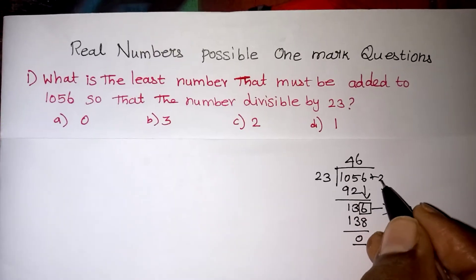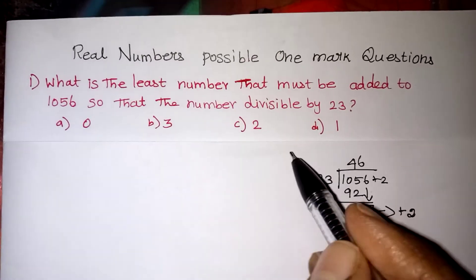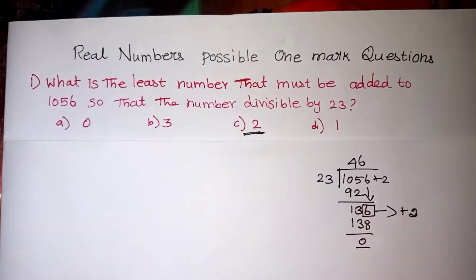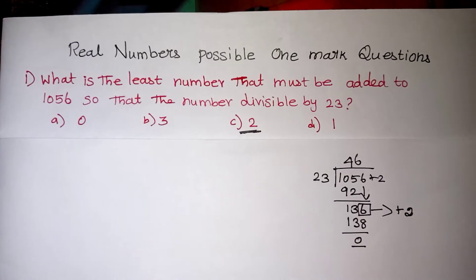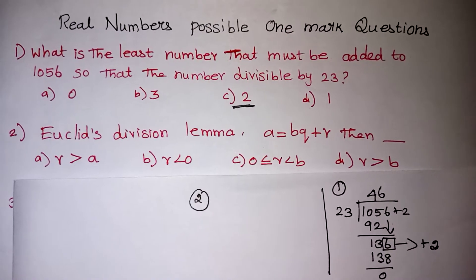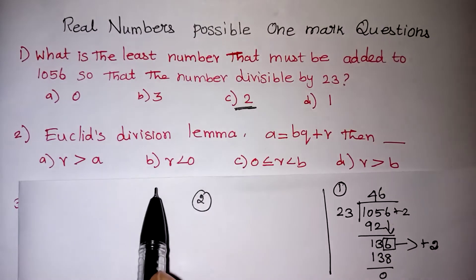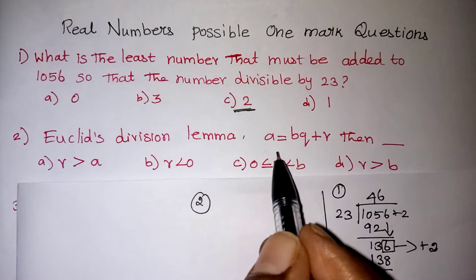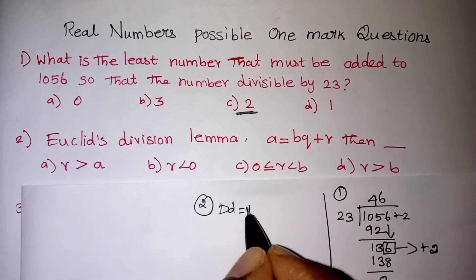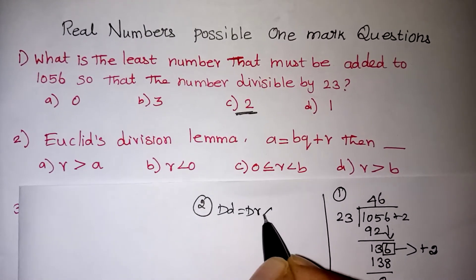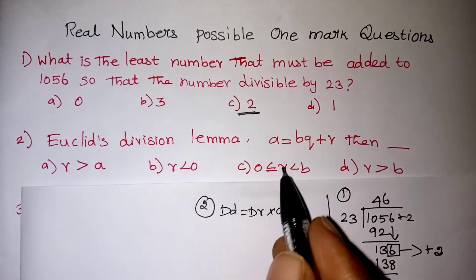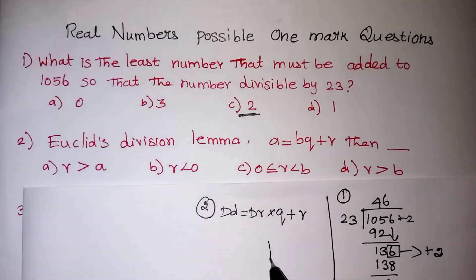So plus 2 should be added — that is your correct answer, 2 is the correct answer for this problem. We will move on to the next problem: the division lemma. The division lemma states that dividend equals divisor into quotient plus remainder.